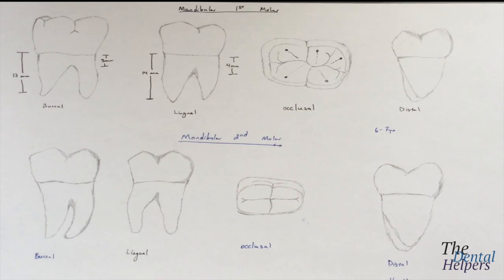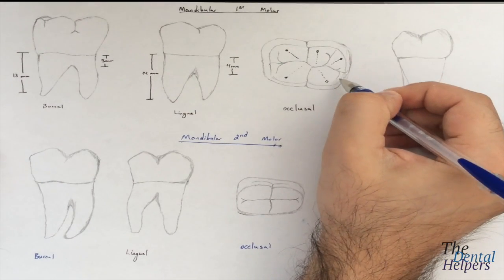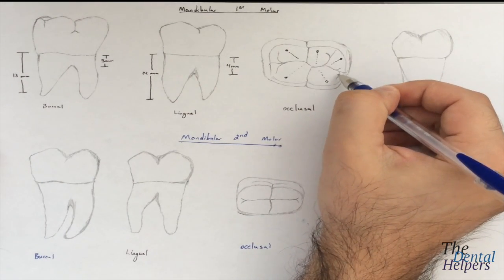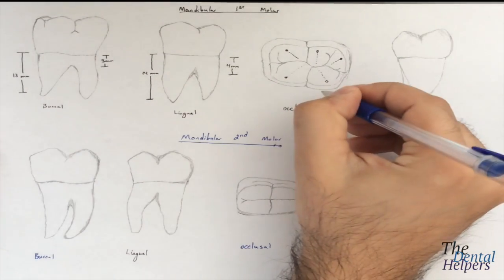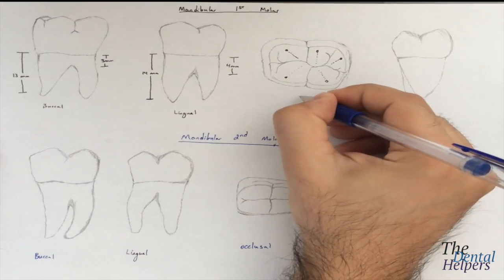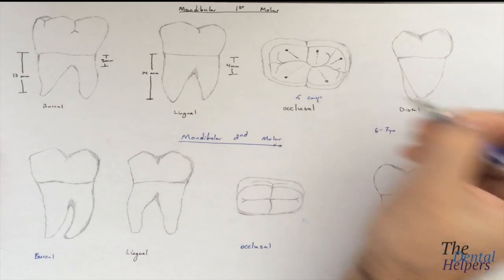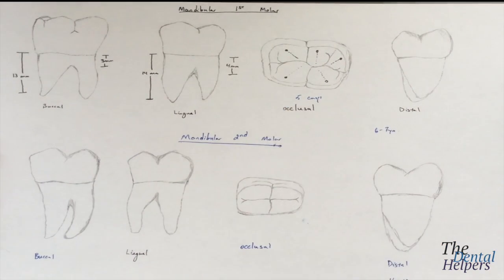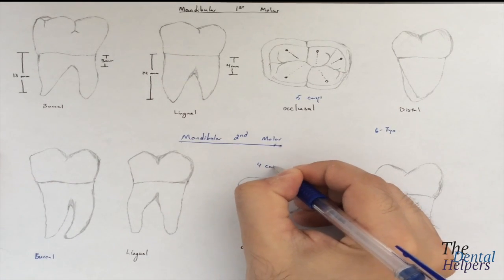Unlike the maxillaries, we have a real cusp here called the distal cusp. The mandibular first molars typically are going to have 5 cusps, while the mandibular seconds are going to have 4 cusps.